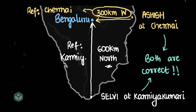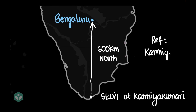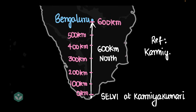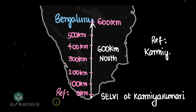Now let's focus on Selvi's perspective. Selvi wants to verify the claim that Bengaluru is 600 kilometers north. She starts measuring the distance between Kanyakumari and Bengaluru, traveling from Kanyakumari to Bengaluru. She starts measuring at home in Kanyakumari — that's zero kilometers. As she moves, she measures the distance traveled, and when she reaches Bengaluru, it's 600 kilometers. Notice: she started measuring from home, so the reference here is at Kanyakumari, at zero kilometers. She's using Kanyakumari as her reference to describe the position of Bengaluru.